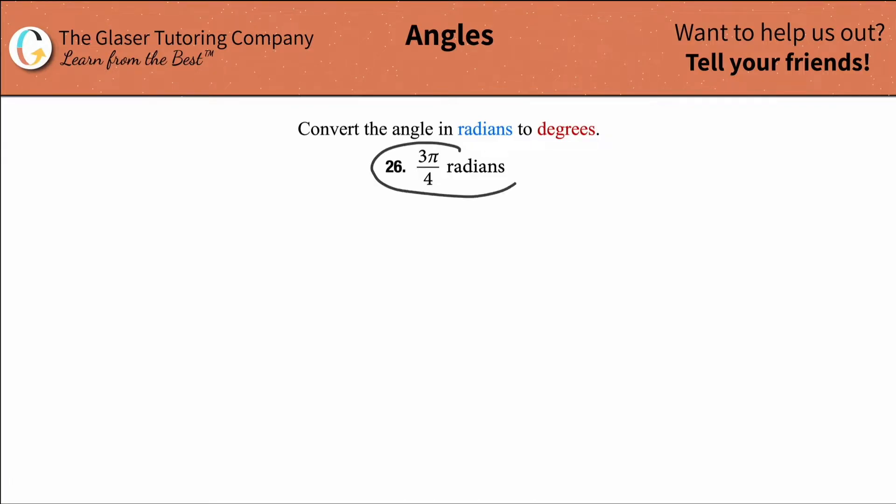So let's convert 3 pi over 4 radians into degrees. How do we do that?